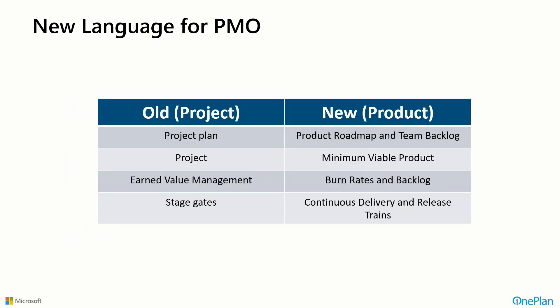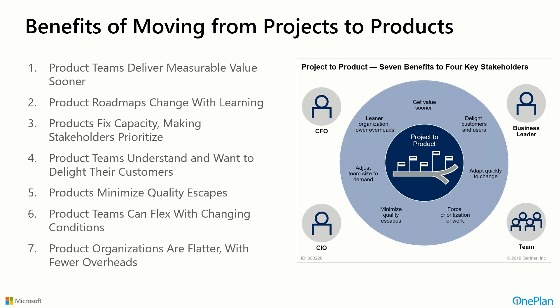Instead of a project plan, we have product roadmaps and team backlogs. Instead of projects, we have minimum viable products and releases. Progress measurements like earned value management transform into burn rates and backlogs. Instead of stage gates, we look at continuous delivery and release trains. It is a culture shift, but if done right, there are real benefits.